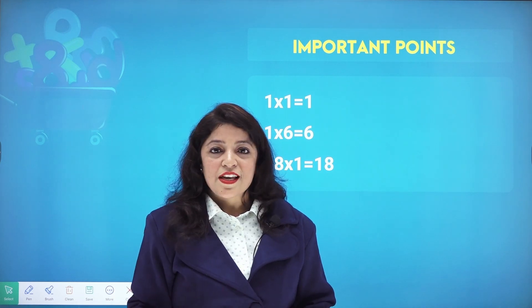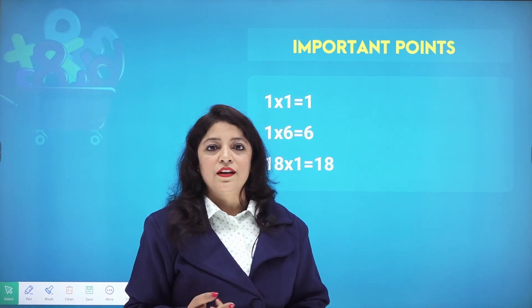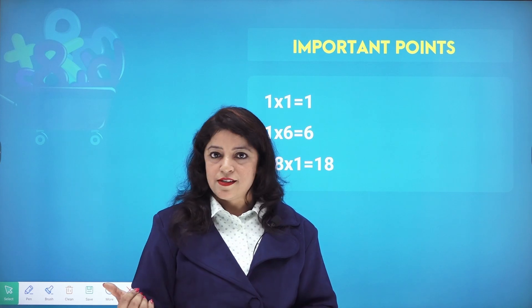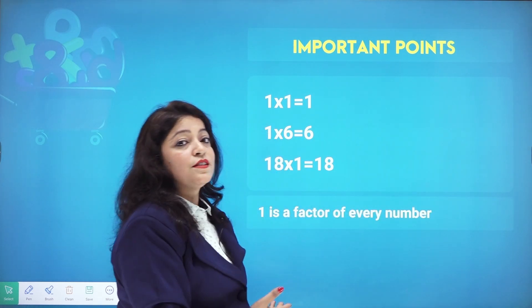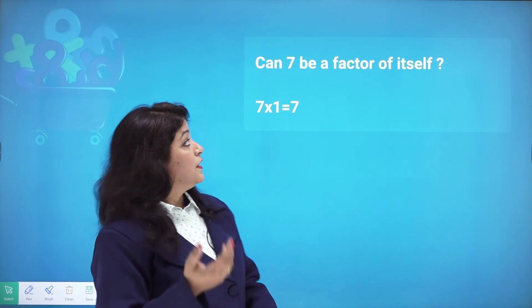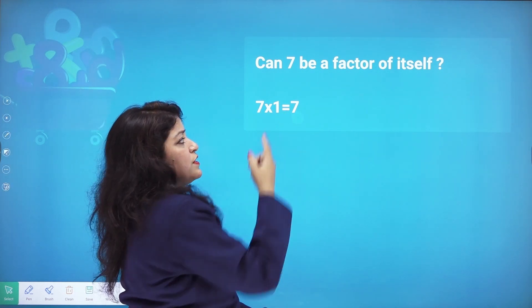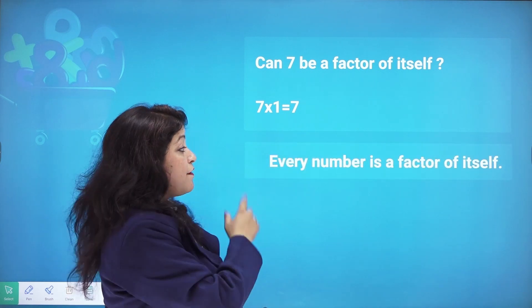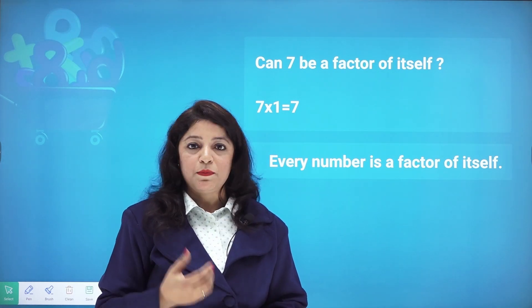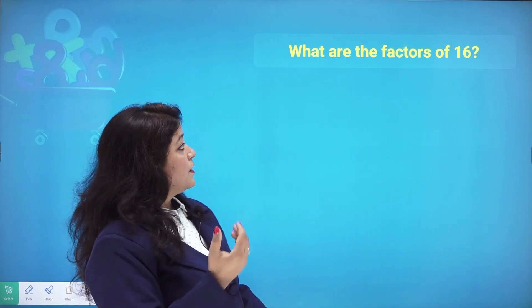For example, the factors of 7 are 1 and 7. The factors of 24 include 1 and 24, and there may be more. A number will always have a minimum of two factors. Also, every number is a factor of itself: 7 times 1 is 7, so yes, 7 is a factor of 7. So 1 and the number itself will always be factors of that number.